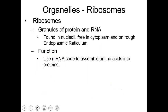The next organelle is ribosomes. In one sentence, ribosomes are nothing but protein factories. In human beings, ribosomes are mostly located on the rough endoplasmic reticulum. They're often found in the nucleolus, which is where they're made, or they could be found in the cytoplasm. The job of these ribosomes is to synthesize proteins.